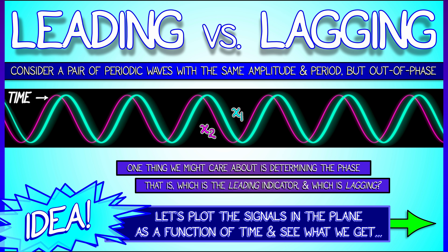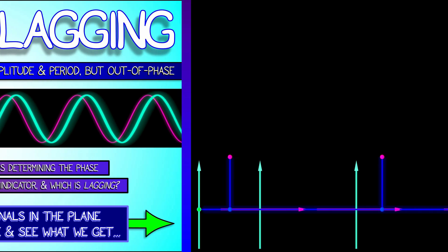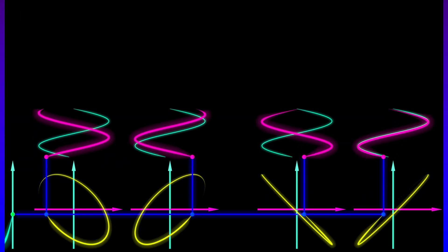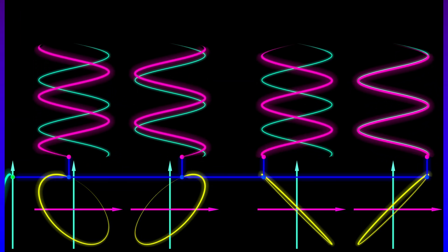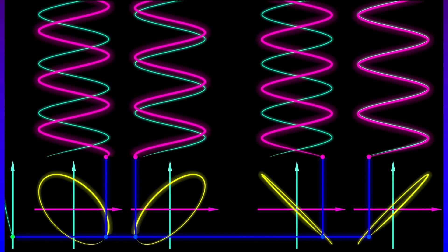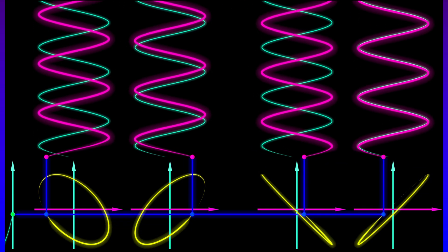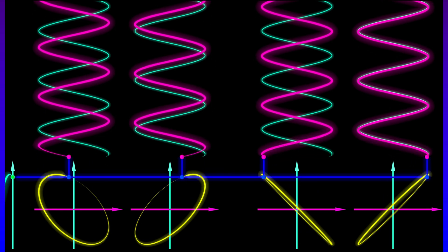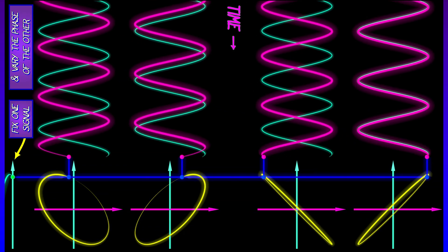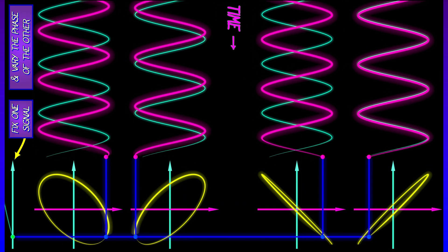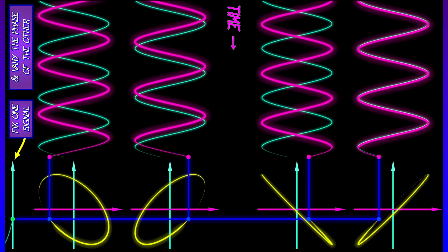Let's plot these two signals, x1 and x2, in the plane as a function of time and see what kind of curves we get. So what I'm going to do is plot a couple of different examples where the curves have different phases between them. And what you're seeing is the evolution over time, but also this plot, this curve in the x1, x2 plane.